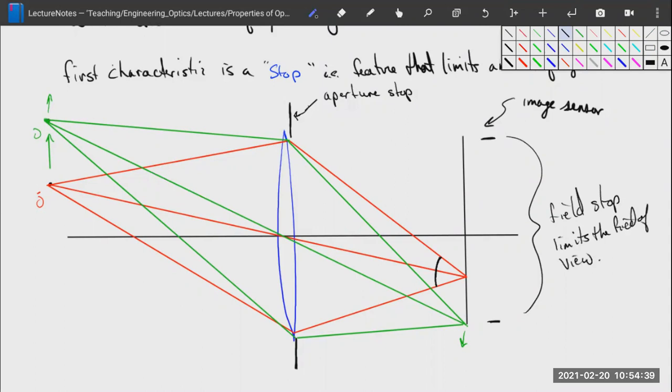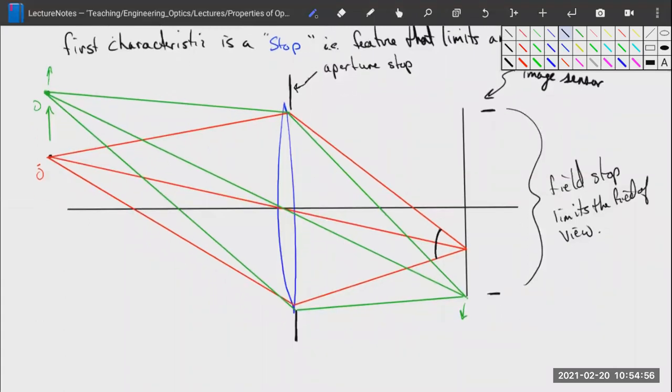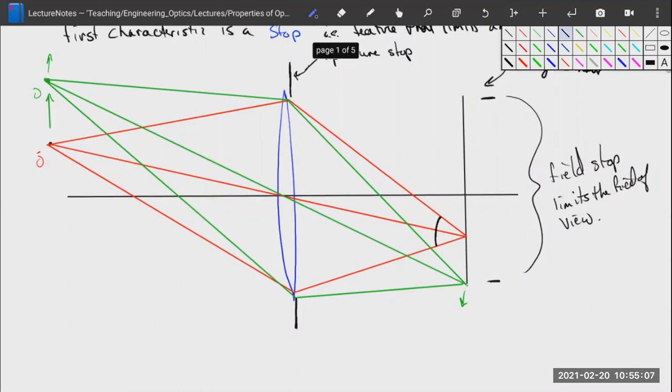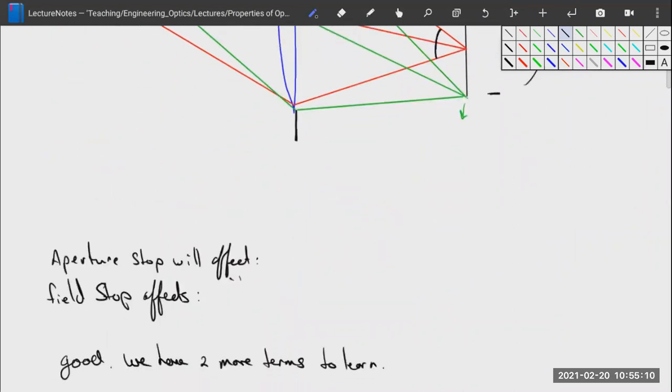You can remember that because the field stop limits the field of view. You generally want your field stop and aperture stop to be different, because if they're not, you get things like vignetting, where parts of your image are dimmer than others. Our field stop limits the height of a point source that we can view, and an aperture stop limits the width of rays that can be collected from a point source.